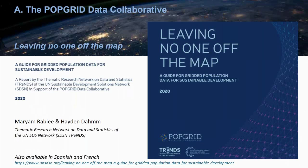There is a very interesting publication from 2020 that we recommend for users interested in using population grids. Published by Marianne Rabier and Hayden Dahn of the Thematic Research Network on Data and Statistics, it is titled 'Leaving No One Off the Map: A Guide for Gridded Population Data for Sustainable Development.' It describes the central data products discussed today, methodological basics for how these data are created, and typical target applications.